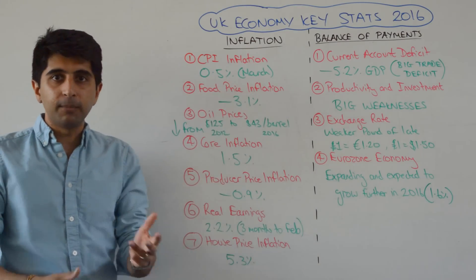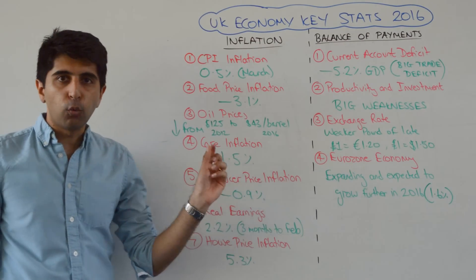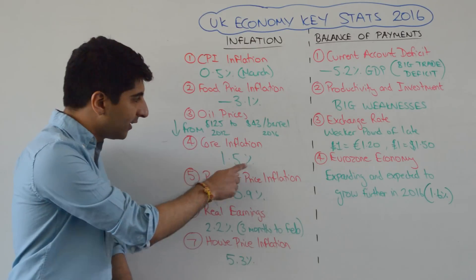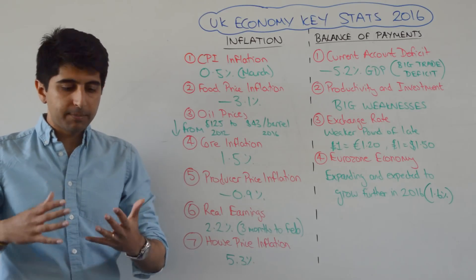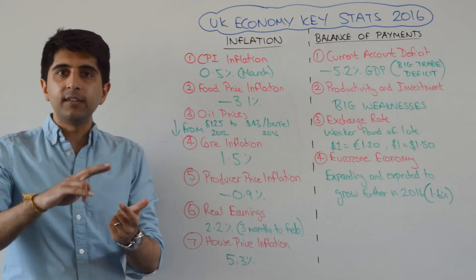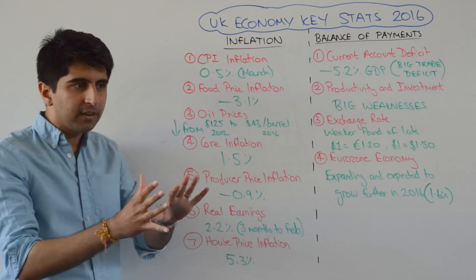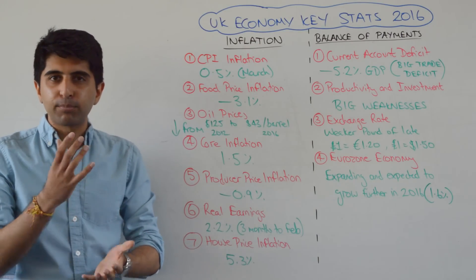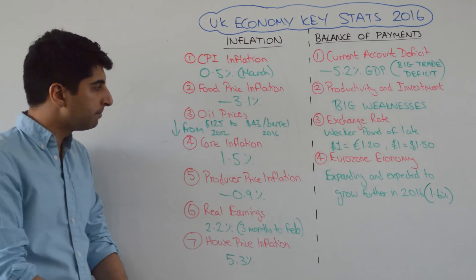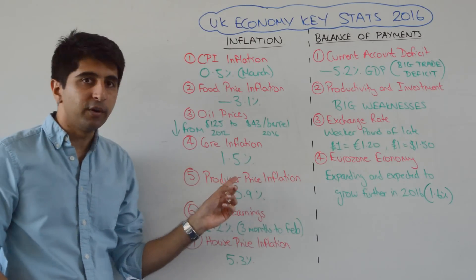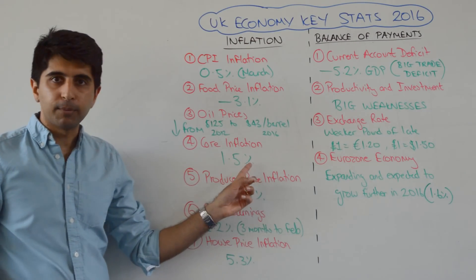But the headline figure is being heavily distorted by those three factors. If we look at the core inflation rate, which stands at 1.5% — excellent to know this for evaluation. Core inflation is the CPI rate stripping out food prices, fuel prices, and gas and electricity prices — taking out items that are very prone to volatility and thus distorting the overall figure. The underlying inflation rate of 1.5% is much more healthy and much closer to target.